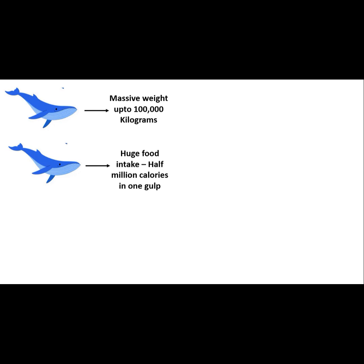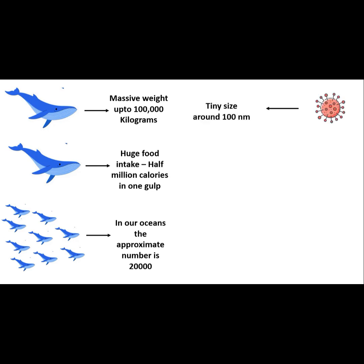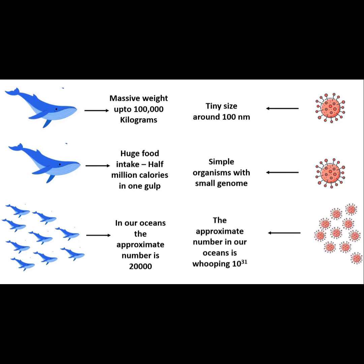With nearly 20,000 of these giants roaming the oceans, they represent one extreme of life. On the flip side, we have tiny viruses which measure around 100 nanometers. These simple organisms have small genomes, but when you consider the number of viruses in our oceans,